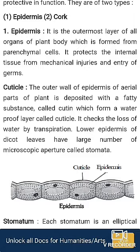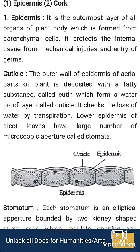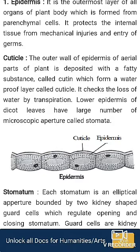The function of epidermis is to protect the internal tissue from mechanical injury and from invasion of germs. The outer wall of the epidermis of aerial parts of a plant is deposited with a fatty substance called cutin, which is secreted from the epidermis itself and forms a waterproof layer called the cuticle. The cuticle checks the loss of water by the plant through the process of transpiration.